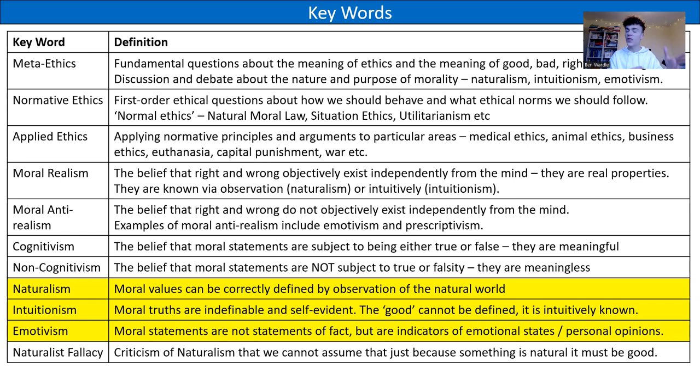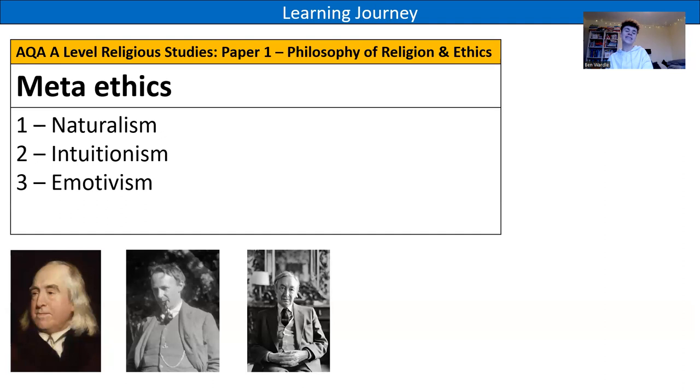Moore said we can't assume that something being natural means it is good. Instead, the good is intuitively known to us, much like the colour yellow — something we can identify but can't actually explain or define. So it's self-evident; we should instinctively just know what the good is. Emotivism is the idea that moral statements are not statements of fact but are indicators of an emotional state or personal opinion. And the naturalistic fallacy is Moore's criticism that we cannot assume just because something is natural it must be good.